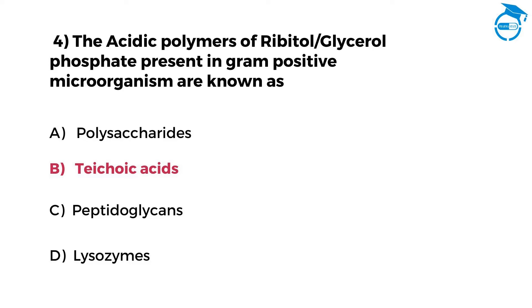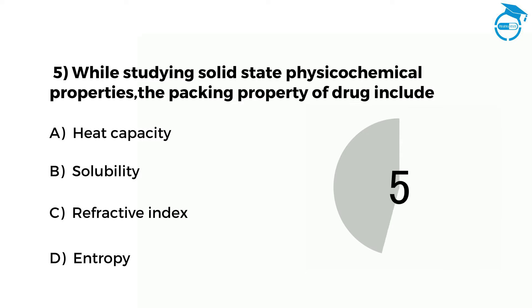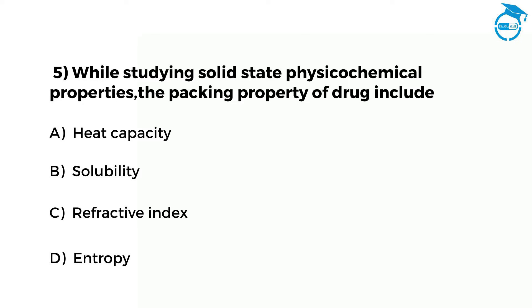Here is the next question. While studying solid state physical chemical properties, the packing property of a drug includes — option A heat capacity, option B solubility, option C refractive index, option D entropy. Your time starts now. The right option is C, that is refractive index.